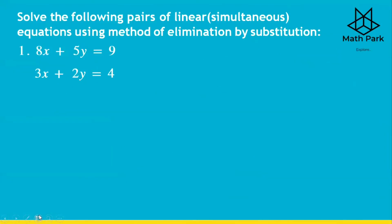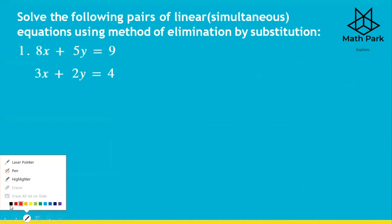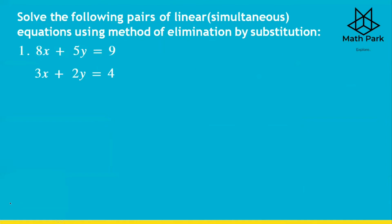Solve the following pair of linear equations using the method of elimination by substitution. A linear equation is an equation which has a degree of a polynomial as one — so x to the power one — that is why it is called a linear equation. Solving simultaneously means solving two equations at the same time. Let us take the first as equation number 1 and the second as equation number 2.